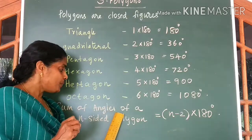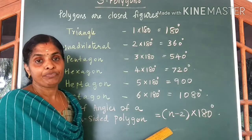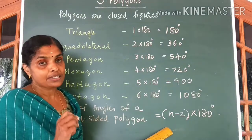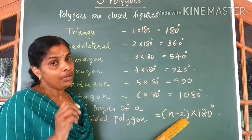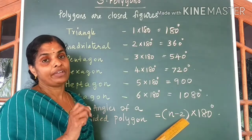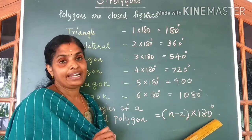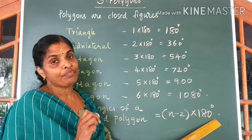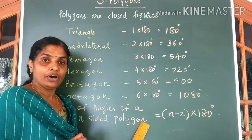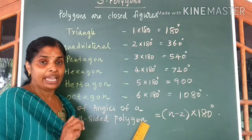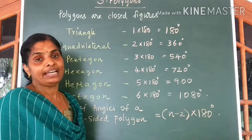For example, if there are 12 sides for a polygon, what would be the sum of angles? The sum of angles would be 12 minus 2, which gives you 10. So the sum of angles of a 12-sided polygon is 10 into 180, which gives you 1800 degrees. We got the formula: sum of angles of any polygon equals (n minus 2) into 180 degrees.